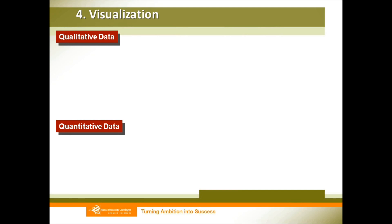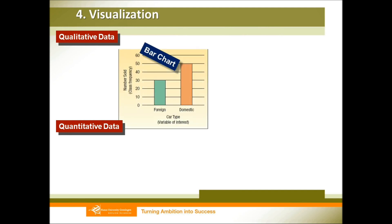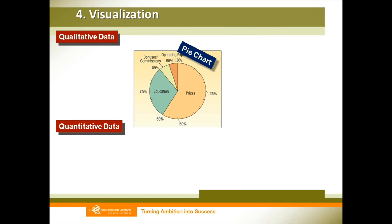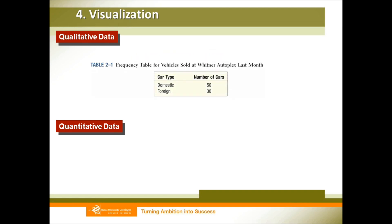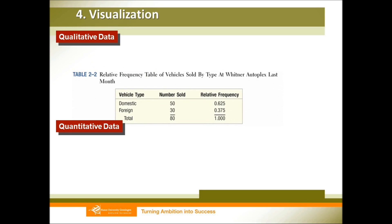To visualize data, we need different approaches for qualitative and quantitative data. For qualitative data, we can use a bar chart — each bar represents one category and the bars are not connected to each other. We can also use a pie chart, which shows the proportion of each sector very clearly. If you want to convey percentage information, use the pie chart. We can also use a frequency table or a relative frequency table with an extra column showing the percentage of each category.